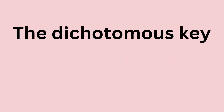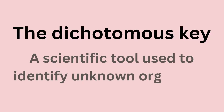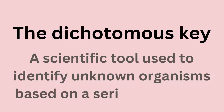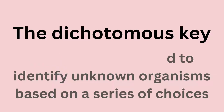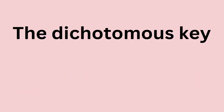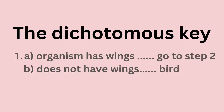The dichotomous key is a scientific tool used to identify unknown organisms based on a series of choices. These choices are presented in pairs, with each choice leading to a further set of options until the organism is accurately identified.